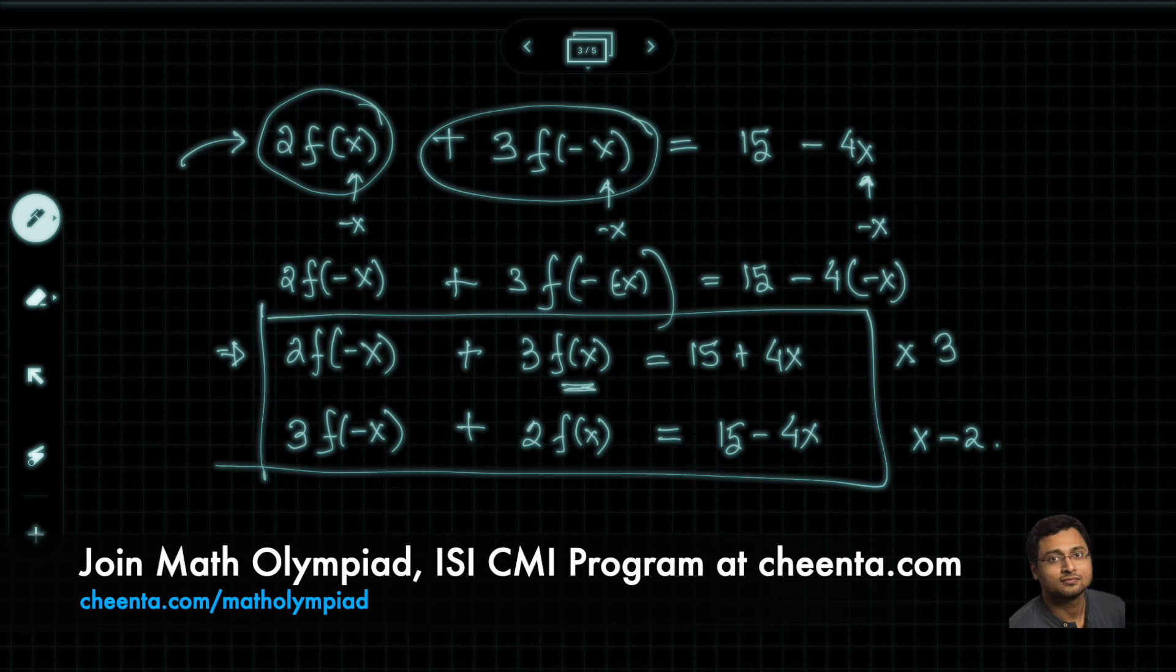Let's see what we get. So if we multiply the first equation by 3, we get 6 times f(-x). So I'm multiplying by 3. Then we have 9 times f(x). This becomes 45, and 4x becomes 12x. That's what happens if you multiply by 3.